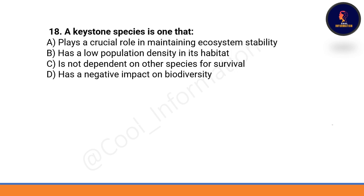A keystone species is one that: (A) plays a crucial role in maintaining ecosystem stability, (B) has a low population density in its habitat, (C) is not dependent on other species for survival, or (D) has a negative impact on biodiversity. The correct option is option A — a keystone species plays a crucial role in maintaining ecosystem stability.